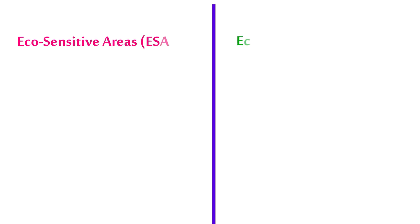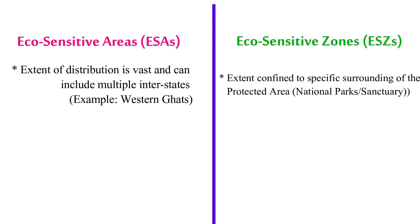With this information, we now come to the last part of this video where we see the differences between eco-sensitive areas and eco-sensitive zones. Please remember that the concept and purpose of eco-sensitive zones and eco-sensitive areas are the same. However, the primary difference between ESA and ESZ is mainly the extent and distribution of the area. The extent and distribution of ESA is vast and can include multiple states — for example, the Western Ghats, which is shared by six states: Gujarat, Goa, Maharashtra, Tamil Nadu, Karnataka, and Kerala. Whereas in an eco-sensitive zone, the extent and distribution is within a specific surrounding of a particular protected area, be it a national park or a sanctuary.